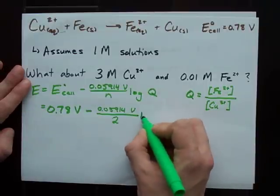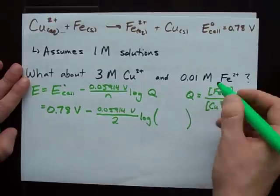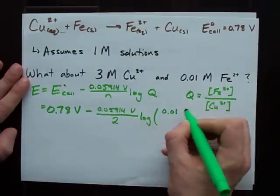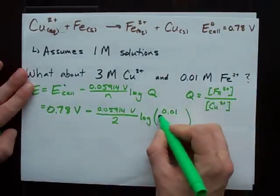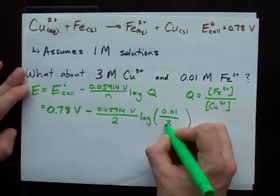So what I end up with is the log of my iron concentration, 0.01 moles per liter, and my copper concentration on the bottom. That's 3 moles per liter.